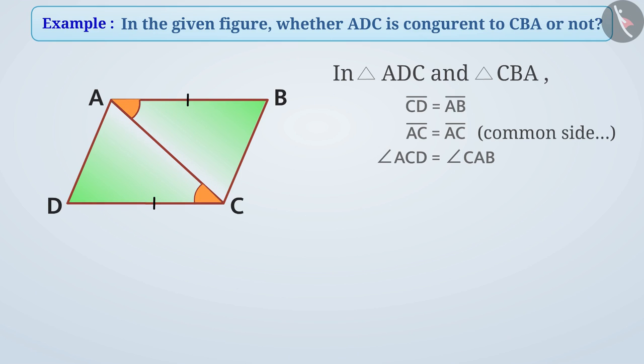Hence, by SAS congruency, we can say that both triangles are congruent.